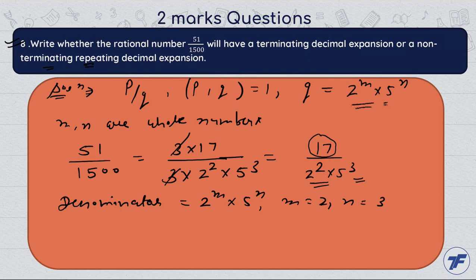It means the rational number is of the time. It means this number 51 upon 1500 is terminating form.